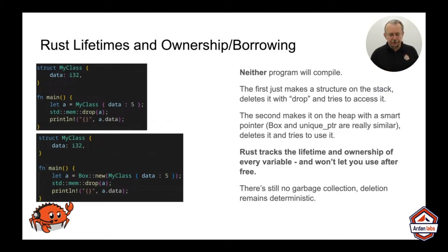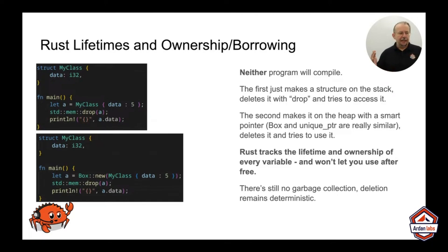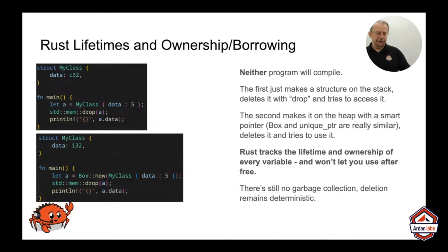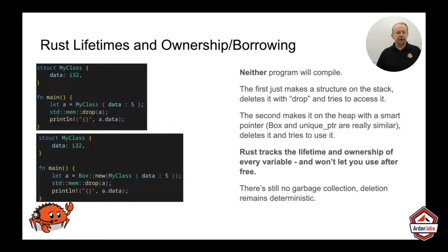Let's have a look at this first program. We make a class, we set some data — it's just like the C++ program. We allocate ourselves a class, we drop it. It's on the stack, not the heap. We try and print the data. Good news — this will not compile because Rust is actually tracking that we've created the object.